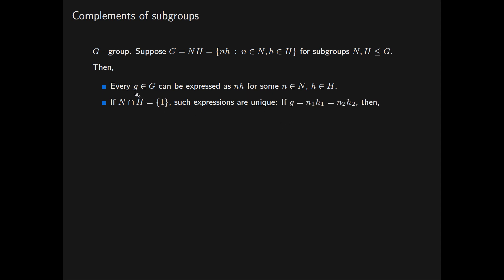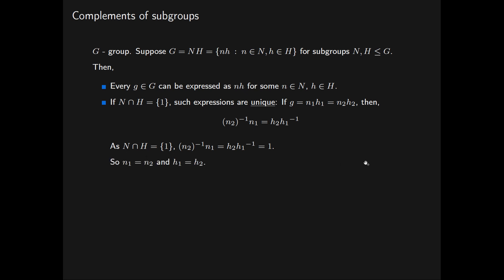To see this, suppose we have an element G of our group G that can be expressed as a product N1H1 and also as N2H2 for elements N1, N2 of N and H1, H2 of H. Then, if we multiply both sides of these expressions by N2 inverse on the left and H1 inverse on the right, we obtain an element in the subgroup N and an element in the subgroup H. So this has to be equal to the identity element 1, because the intersection is equal to the trivial subgroup. It follows that N1 equals N2 and H1 equals H2, by multiplying both sides appropriately.